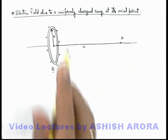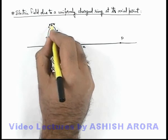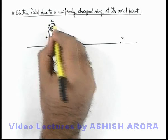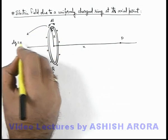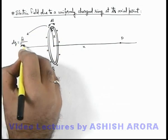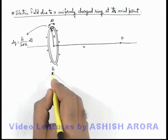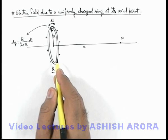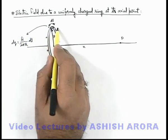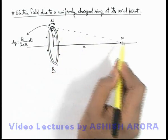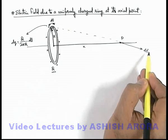To find the net electric field at p, we consider a small element of length dl in this ring. On this dl, the charge can be written as dq = q/(2πr) × dl, because the total charge q is uniformly distributed over the circumference 2πr. This dq can then be considered as a point charge, and due to this dq the electric field at point p is directed away from dq, that is dE.